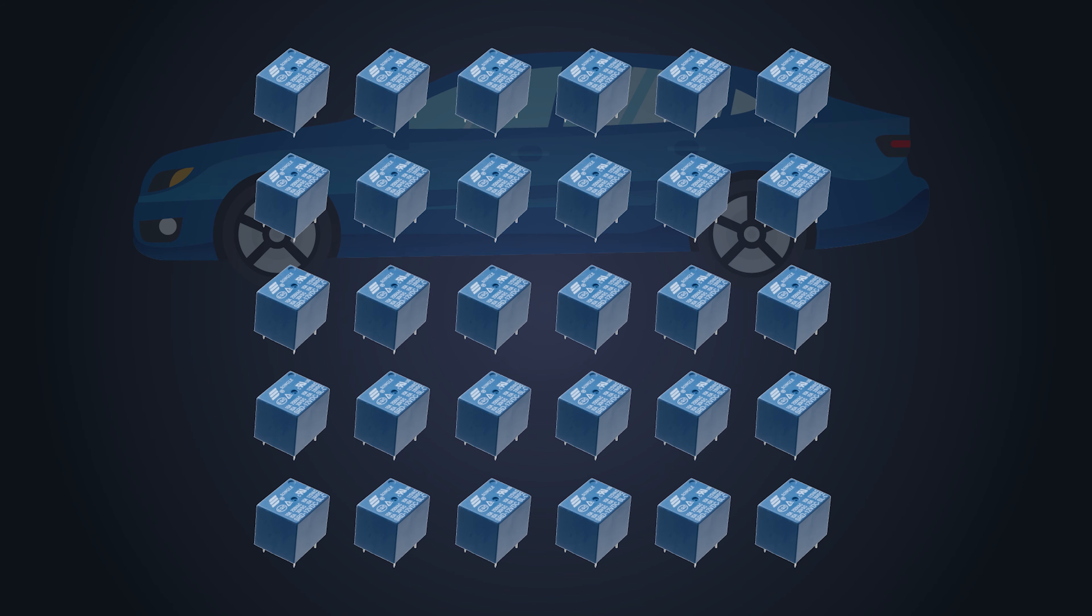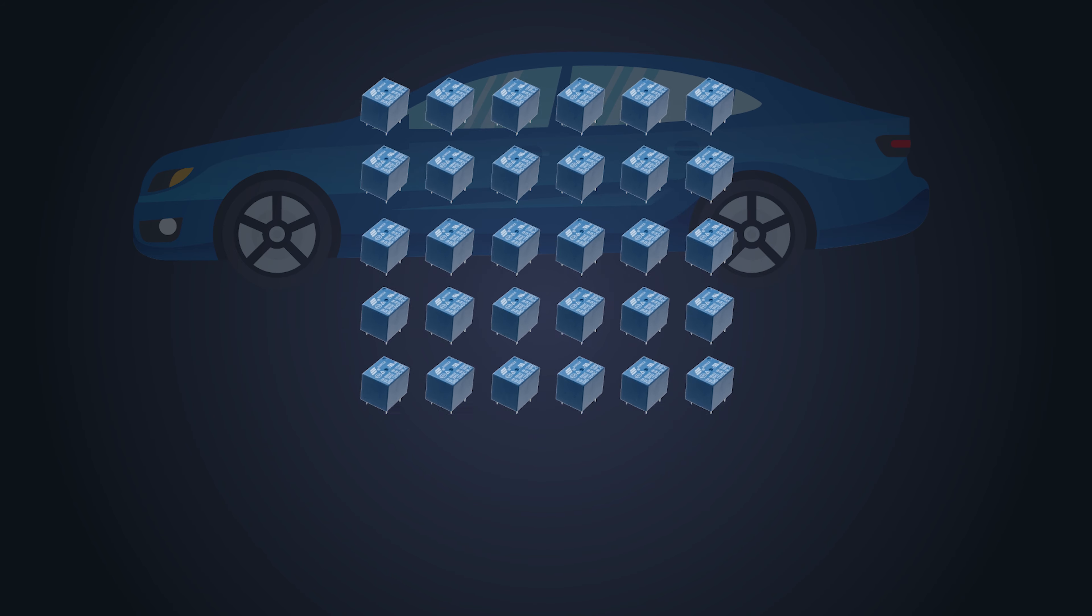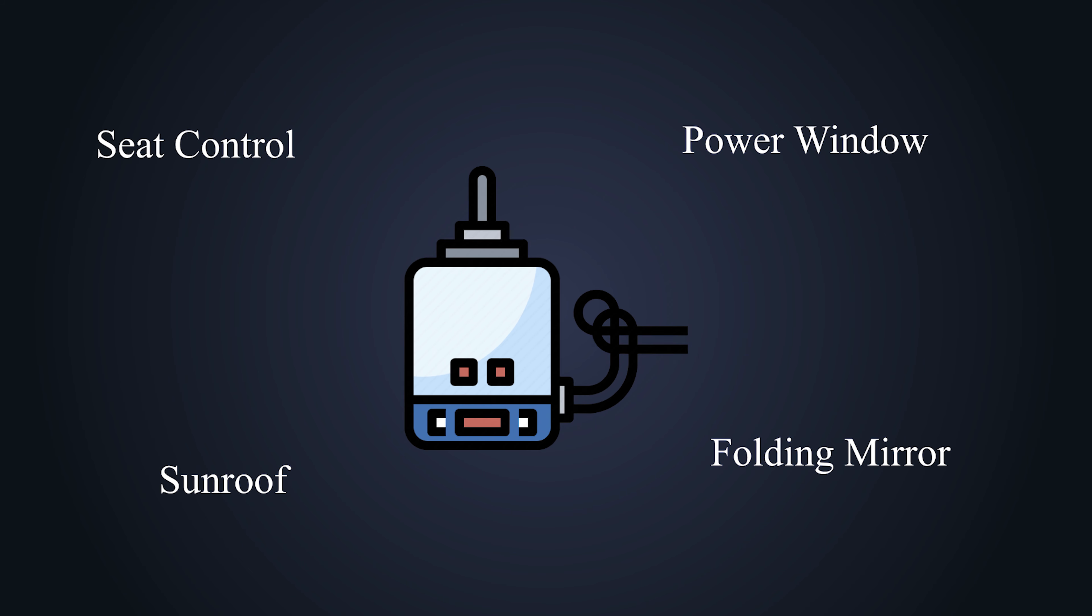In modern automotive applications, there are at least 30 relays used in a car. All the fascinating features in the car such as power windows, folding mirrors, sunroof, seat control, and many such systems work on a simple DC motor. We control and drive these motors according to the features requirement. These relays control all sorts of motors in the vehicle because driving a relay is very simple.